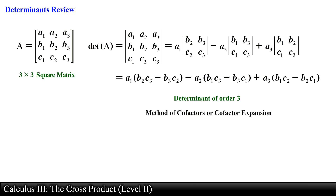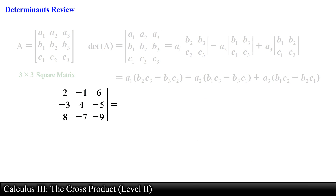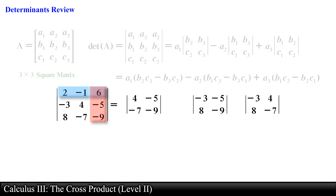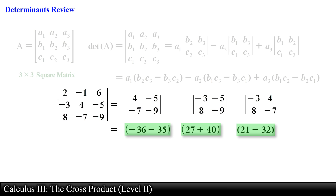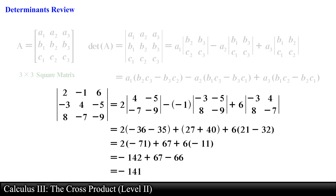In the end a determinant of order 3 can be found using the cofactor expansion expression. For example, the determinant of a 3 by 3 square matrix can be found by first finding the 3 minors via cofactor expansion of the first row, obtaining three 2 by 2 matrices. Then it is a matter of finding the determinant of each 2 by 2 matrix and multiplying this value with its respective entry from the first row, making sure to include the alternating sign positive, negative, and positive. Simplifying gives us the final determinant of the 3 by 3 matrix.